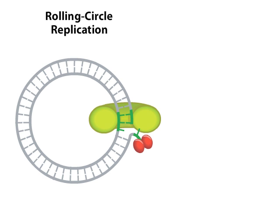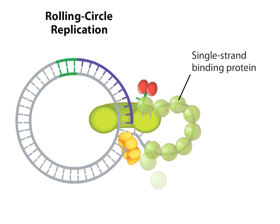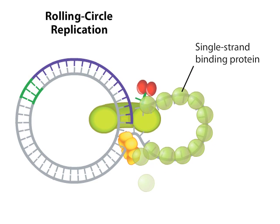The REPA initiator protein recruits a helicase that unwinds the DNA. As the DNA unwinds, it becomes coated by single-strand DNA binding proteins.